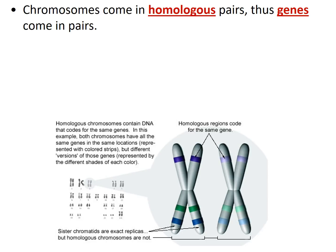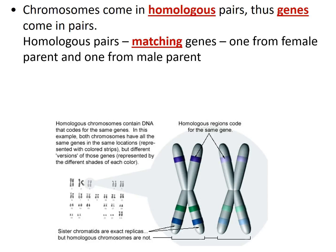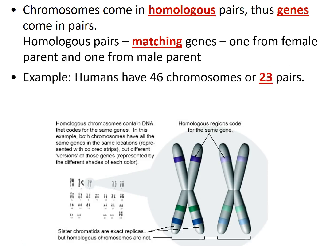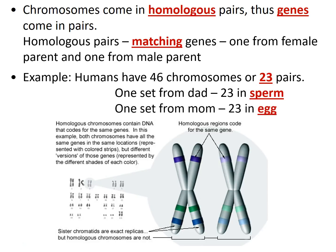For every trait, for every protein that you make, you actually have two copies of the instructions — one copy you got from mom and one from dad. It may be useful to think of genes like your shoes: you need both shoes to leave the house, and the shoes accomplish the same task but they're not exactly identical to each other. For example, if you have 46 chromosomes that's 23 pairs of homologous chromosomes — 23 from dad in the sperm and 23 from mom in the egg cell.